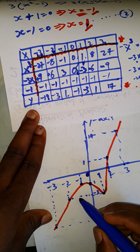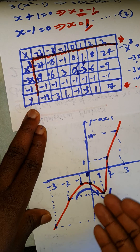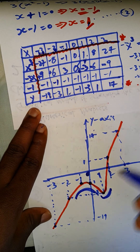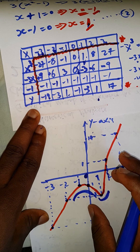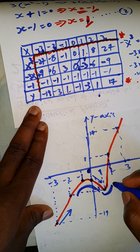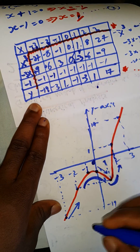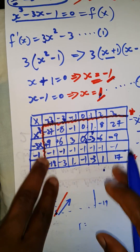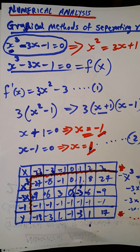Here we have our concave down and here we have our concave up. I will show you how to find concave down and concave up using a table. But this approach of drawing the graph alone shows us: this is local maximum, this is local minimum, and this is local maximum. In the next video I will show you the second approach of the graphical method of solving equations. Thank you for watching — see you in the next video. Bye-bye.